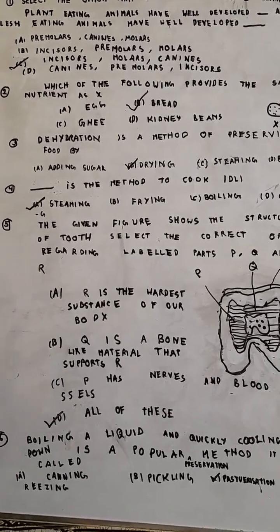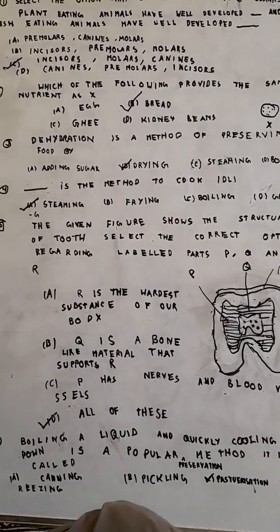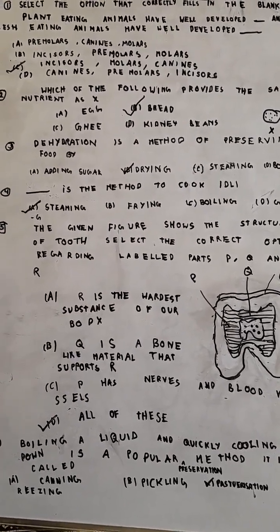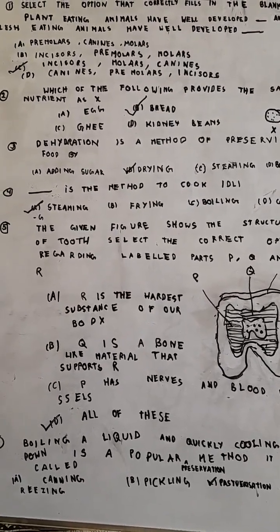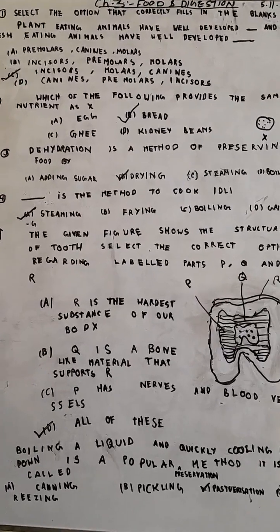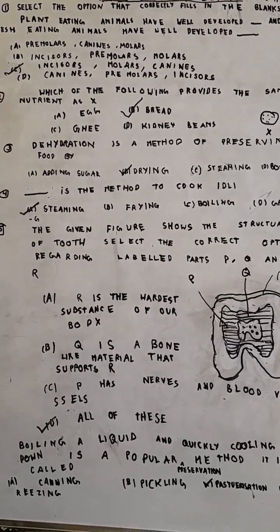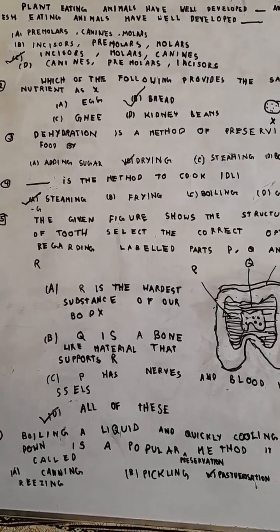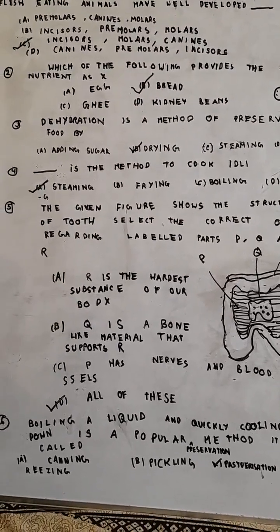The second question: which of the following provides the same nutrient as eggs? Potato provides carbohydrates. Bread provides carbohydrates. Ghee provides fats. Kidney beans provide nutrients. So the correct option will be option B, bread, as it provides the same nutrient as potato: carbohydrates.